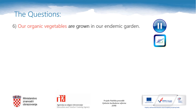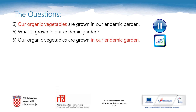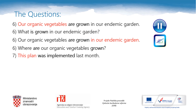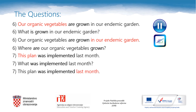Sentence 6: Our organic vegetables are grown in our endemic garden. Our question is: What is grown in our endemic garden? Or, for place: Where are our organic vegetables grown? Sentence 7: This plan was implemented last month. Our question is: What was implemented last month? Or, for time: When was this plan implemented? Good job!